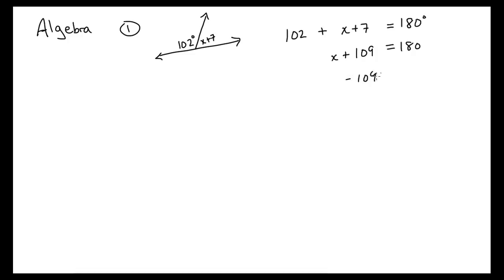And then we're going to subtract. We get x is equal to, let's see, 180 minus 109, that is pretty simple, that's 71. And that's our answer. Every time we get an answer, we're going to put a box around it.